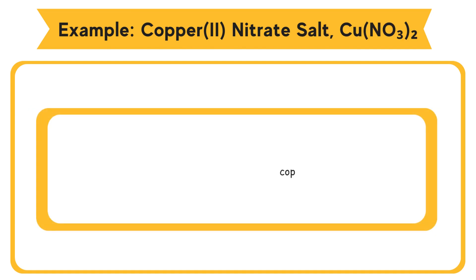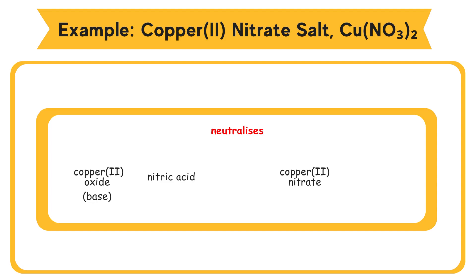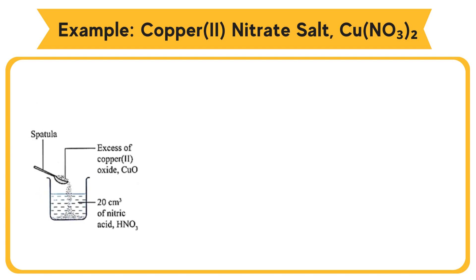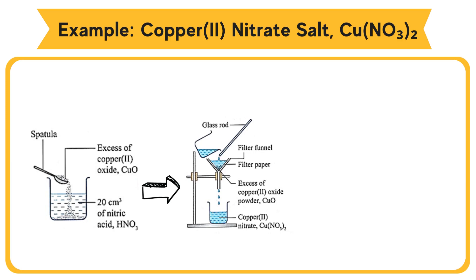Example: Prepare a pure sample of copper(II) nitrate by mixing nitric acid HNO3 with copper(II) oxide CuO. Copper(II) oxide is a base and it neutralizes the nitric acid according to the following equation: CuO(s) + 2HNO3(aq) → Cu(NO3)2(aq) + H2O(l). Add excess copper(II) oxide CuO into heated nitric acid HNO3 in a beaker. Excess copper(II) oxide is used to ensure that all the nitric acid is completely reacted. The black copper(II) oxide dissolves to form a blue solution. Filter the excess copper(II) oxide powder CuO from the mixture.